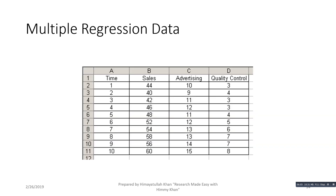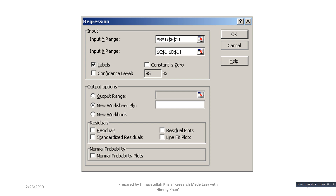Now I enter another variable, giving us three variables. In column B we have sales revenue, in column C we have advertising expenditure, and in column D we have quality control. Columns C and D are the two explanatory variables, while column B is the dependent variable. We will regress sales on advertising expenditure and quality control — these values are in million dollars. Again we give the Input Y Range for the dependent variable and the Input X Range now covering two variables, check Labels, define the output range, and click OK.